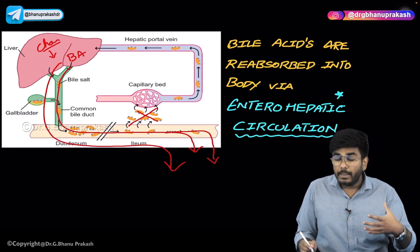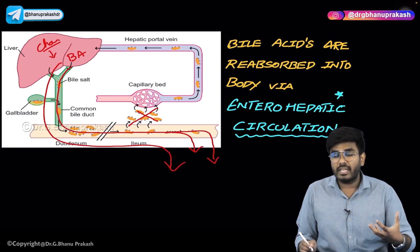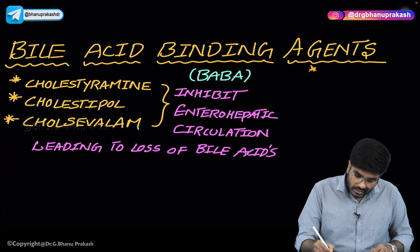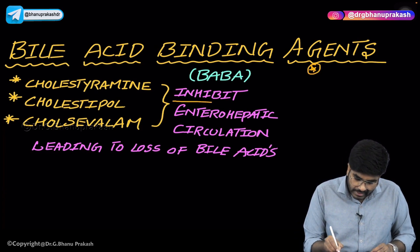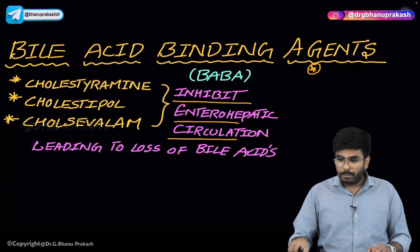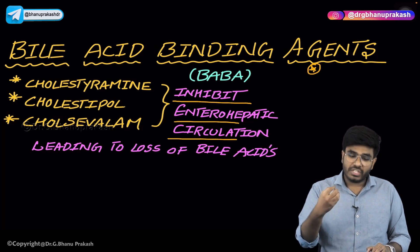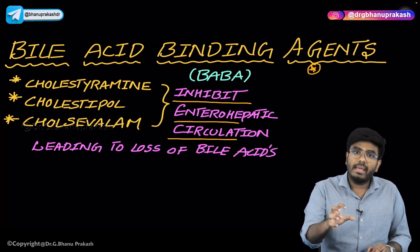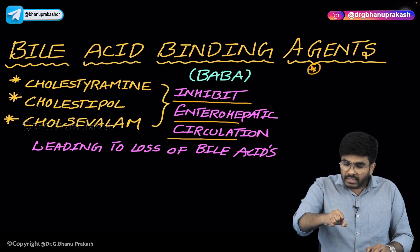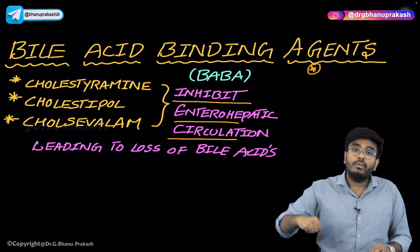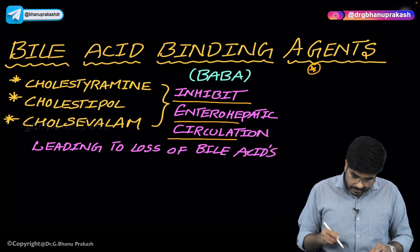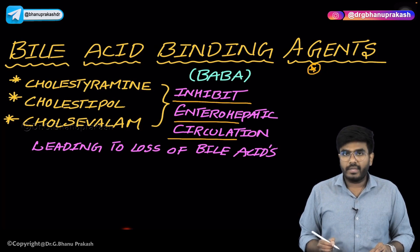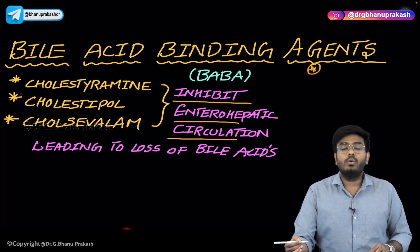How can we treat hypertriglyceridemia, hypercholesterolemia, and hyperlipidemia using this concept? By using drugs called bile acid binding agents. These bile acid binding agents inhibit the enterohepatic circulation — they bind with the bile acids and take them out of the body, so there is no enterohepatic reuptake. Bile acid binding drugs, also called BABA agents, can be used in treating hyperlipidemia. Examples are cholestyramine, colestipol, and colesevelam.